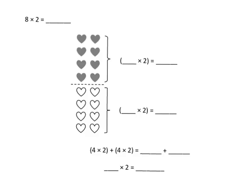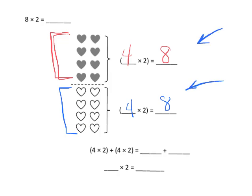As an example, we're given an 8 by 2, or 8 times 2, and the array right here is broken up for us. We're going to be filling in the blanks. Up here, this section is 4 rows of 2, which is 8, and down here we have another 4 rows of 2, which is 8. Students will either have these memorized, use skip counting, or simply count every single little heart. Then down below, 4 times 2 plus 4 times 2 is 8 plus 8, so that means 8 times 2 equals 16.